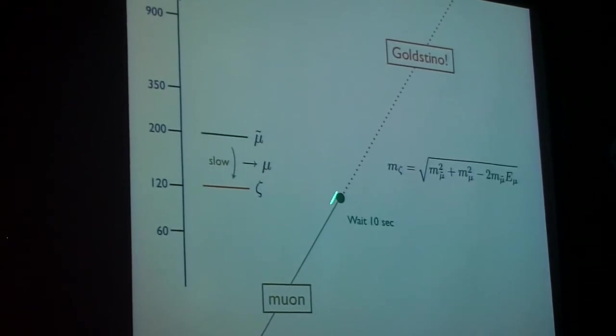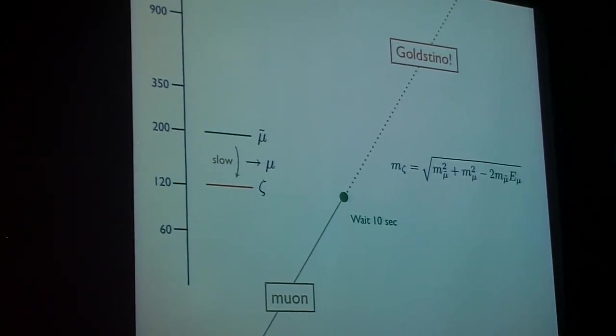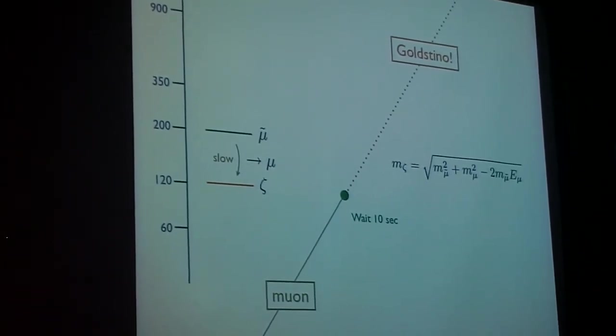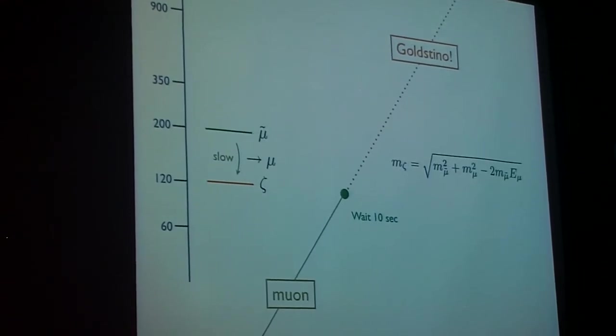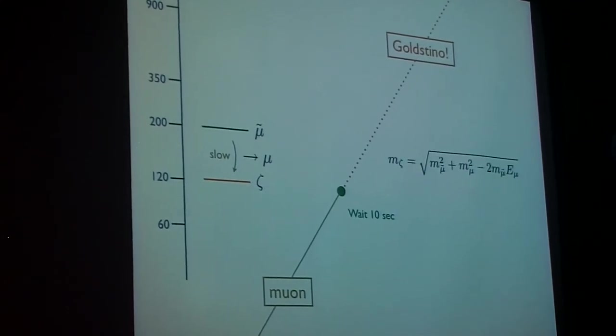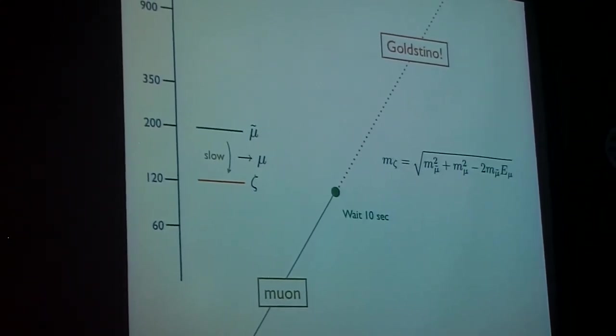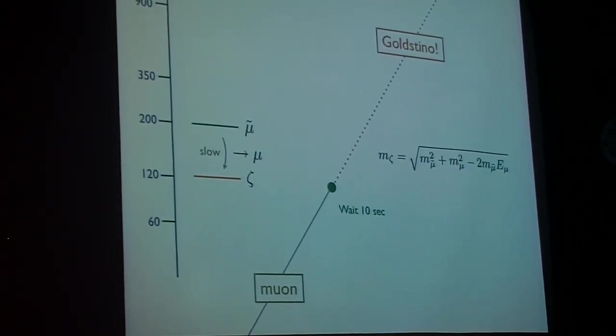By measuring this muon energy, it will be monochromatic. Monochromatic muons coming out. You would infer the existence of a neutral particle. In this story, this neutral particle is the Goldstino. You can get the mass of that Goldstino. It's a mass of 120 GeV in this example.